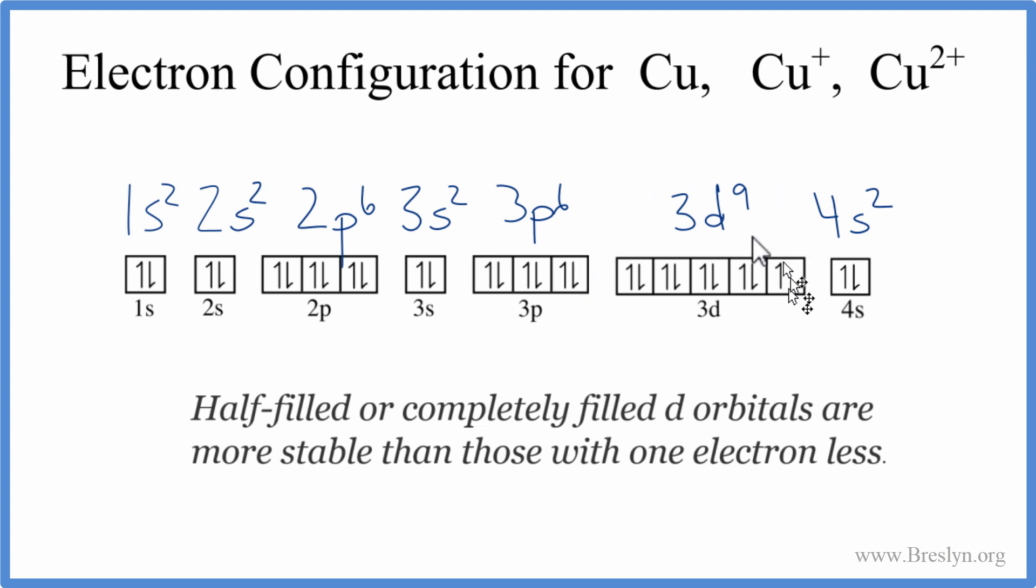So we have this d orbital up here for copper, and it's almost full. We have two electrons in each of these. This only has one. So if we could put one more electron here, this would be much more stable. The way we do that is we take this electron here from the 4s2, and we put it in the 3d9.